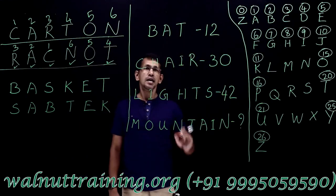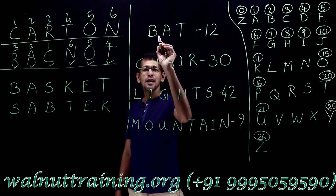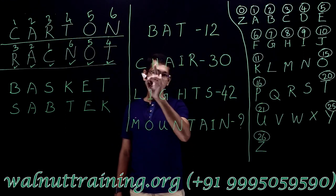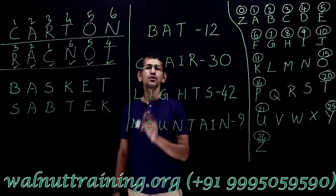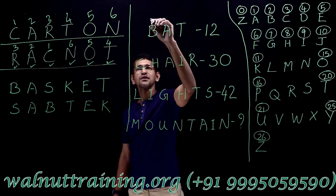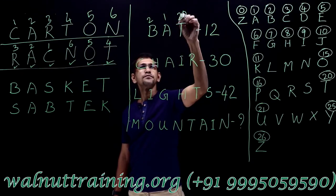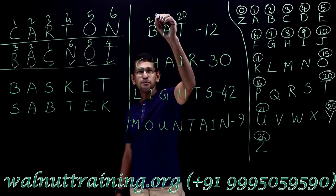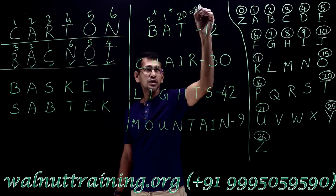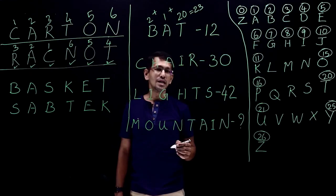Now look at this one right here. Bat is called as 12. Again, what is it? Letters called as numbers. When the letters called as numbers, what do we do? Definitely, we look at the position values. That's the first thing we do. 2, 1, 20. 2 plus 1, 3. 3 plus 20, 23. And 23 is called as 12. The difference is what? 11.